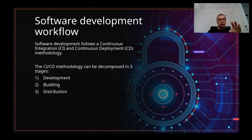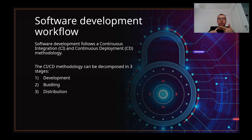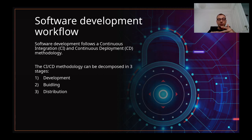Now let's focus on the code stage and see how it works to better understand the security and how we can secure the software supply chain. Software development follows what we call a continuous integration and continuous deployment methodology — a CI/CD methodology, which you may have already heard about. This methodology can be decomposed into three main stages. The first one is development, when the developer writes code. Then you have the building stage, where all the written code needs to be compiled to an executable. And finally, you have the distribution phase, where you make the executable available for the end user.